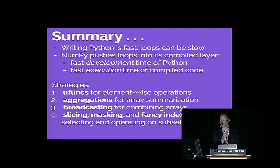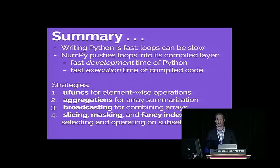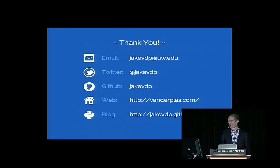In summary: writing Python is fast for development, but loops in particular can be really slow. If you're looping over large data sets, use the NumPy package and try to get rid of those loops. Use ufuncs for element-wise operations, aggregations to summarize parts of the array, broadcasting to combine arrays of different sizes, and slicing, masking, and fancy indexing to access parts of arrays very quickly. The slides are available on SpeakerDeck — check my Twitter account, JakeVDP, for the link.